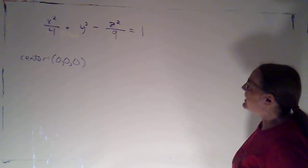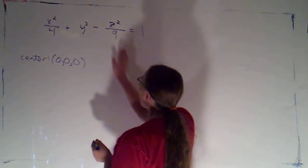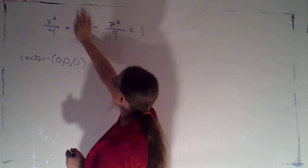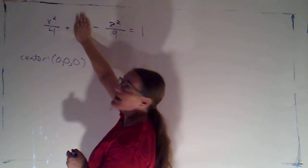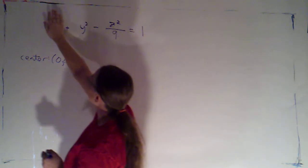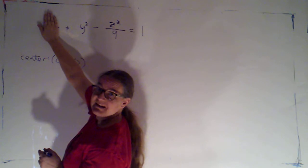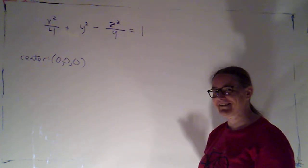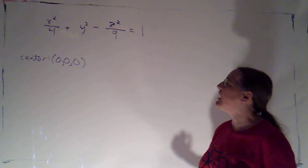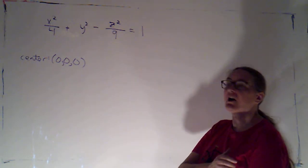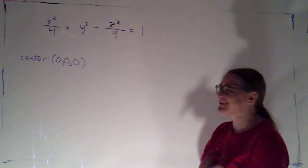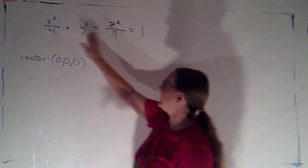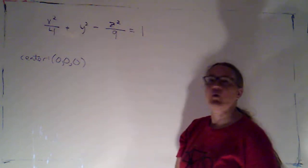If I take a look in the x, y plane, I'm just getting an ellipse. If I look in the x, z plane, I'd be getting a hyperbola. And if I look in the y, z plane, I'm going to be getting a hyperbola. So the cross-sectional curves are going to be conic sections, and I can see that just from the equations that I get if I kill off one of those terms.